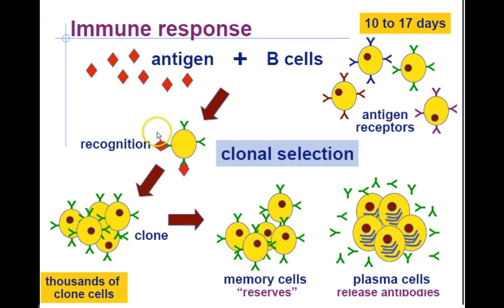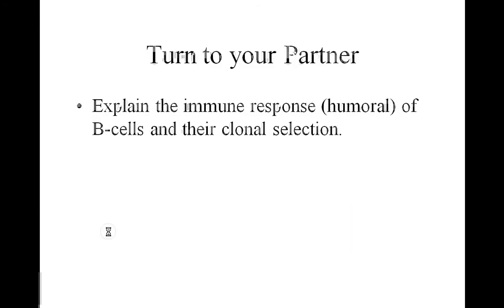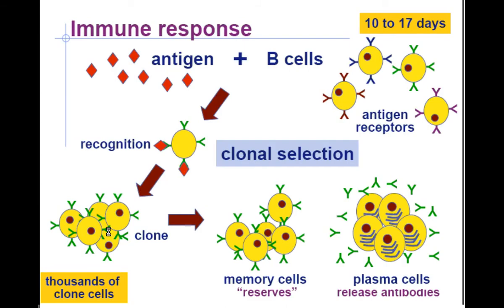The first step is the antigen binds with a B cell, and then that B cell is triggered to make lots of clones of itself. Clones are just genetically identical copies, and each one will be able to bind to the antigen. This is beneficial: if you're invaded by a virus with this antigen, the B cells that respond will start making copies of themselves so they can fight it off. Now we have thousands of clone cells.